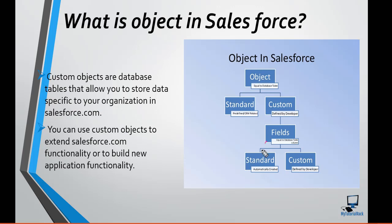For every custom object, there are two different kinds of fields available. The first type is called standard fields and the second type is called custom fields. Standard fields are fields that automatically get created when you create the object — like Created By and Modified By. These are read-only fields, meaning you cannot modify their values. Custom fields are the fields that you yourself create on an object.